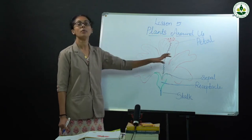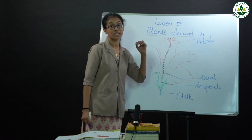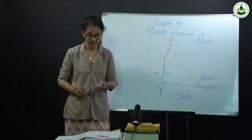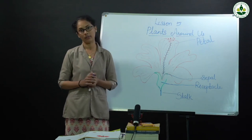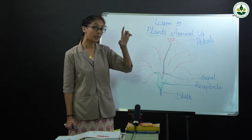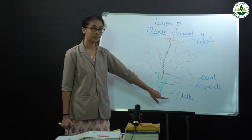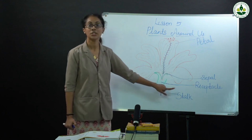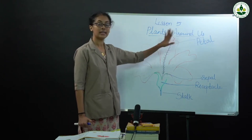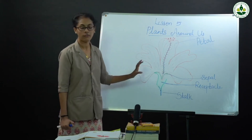Sepals are the outermost part of a flower. Petals are the colorful and attractive part of a flower. So to summarize: the receptacle is the base of a flower, the stalk is the part to which other parts are attached, sepals are the outermost part, and petals are the colorful parts. These are the different parts of a flower.